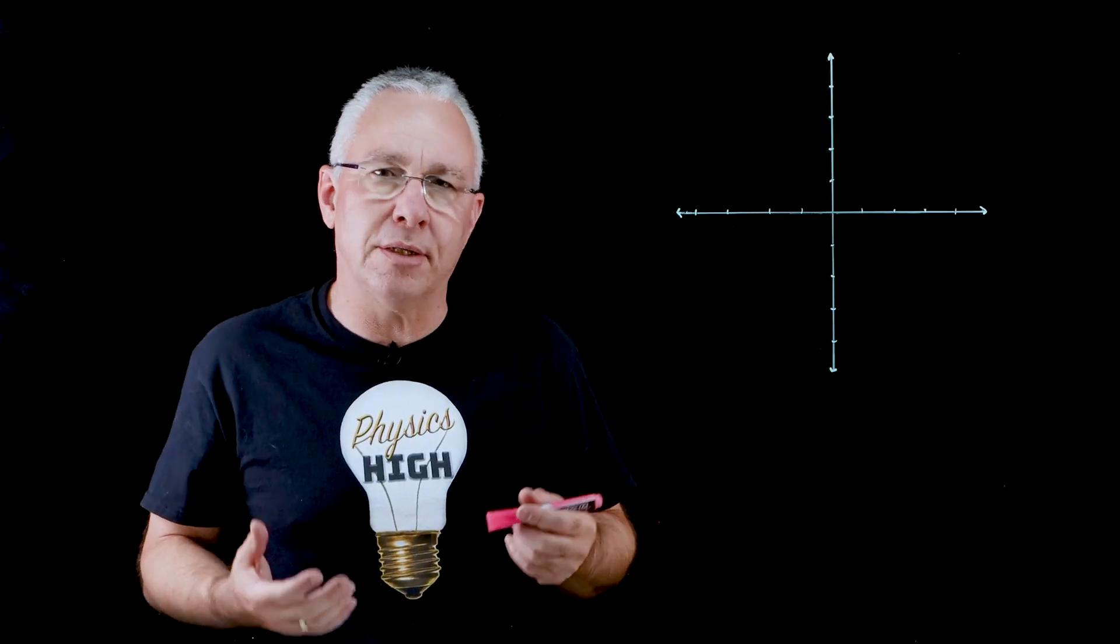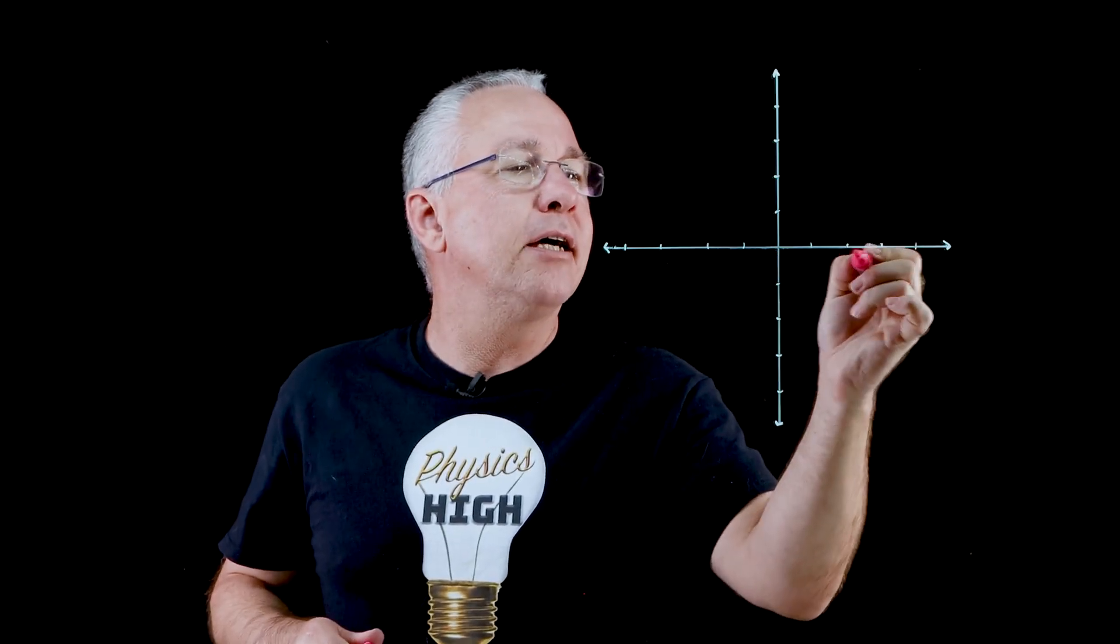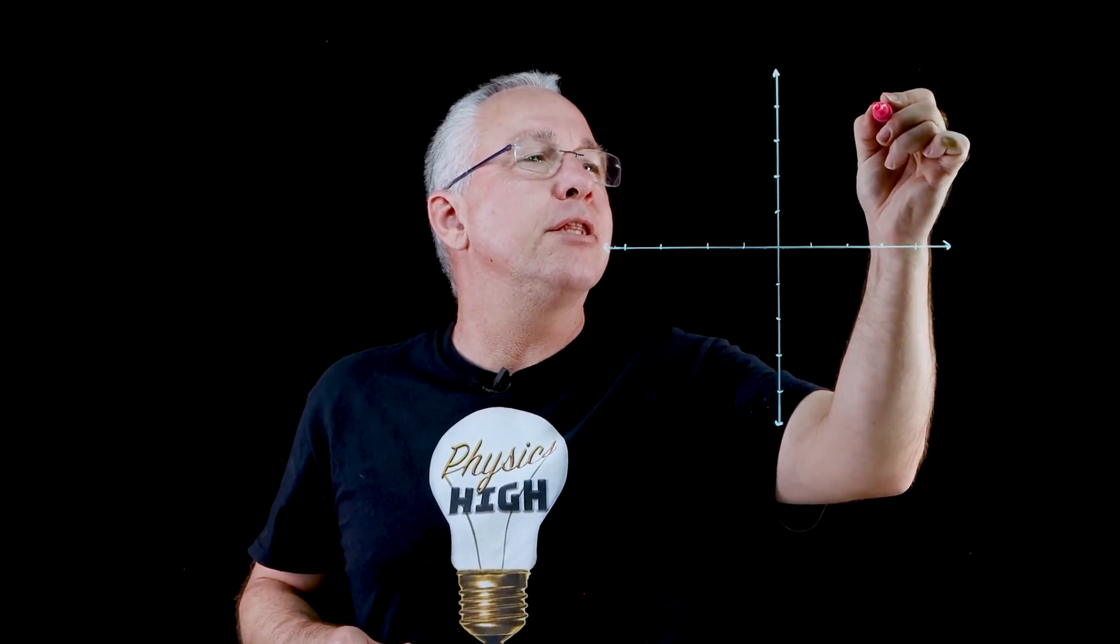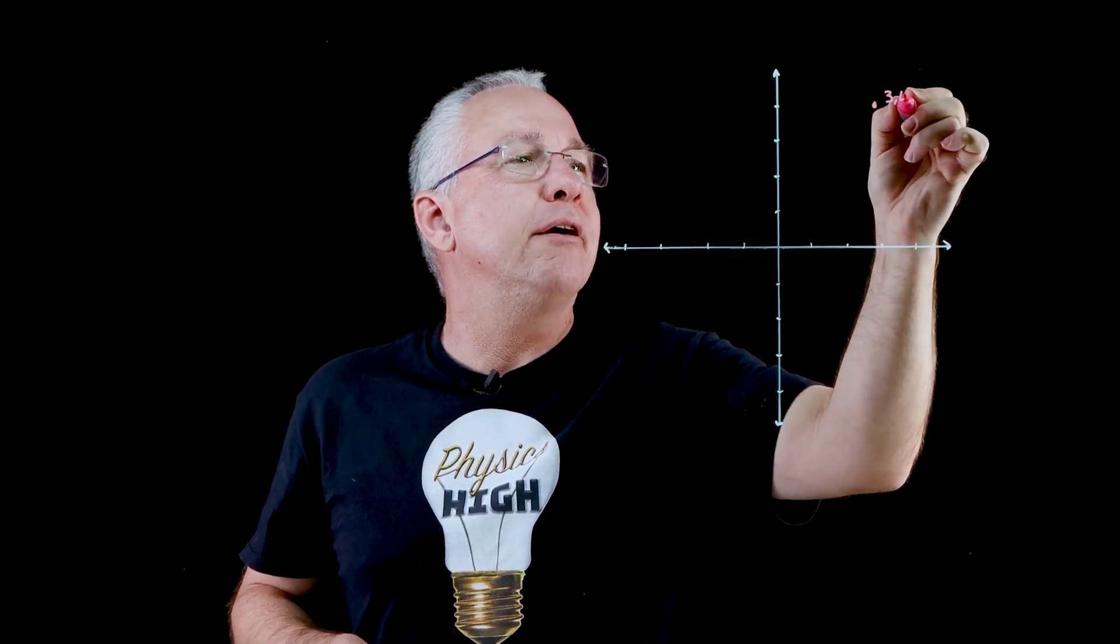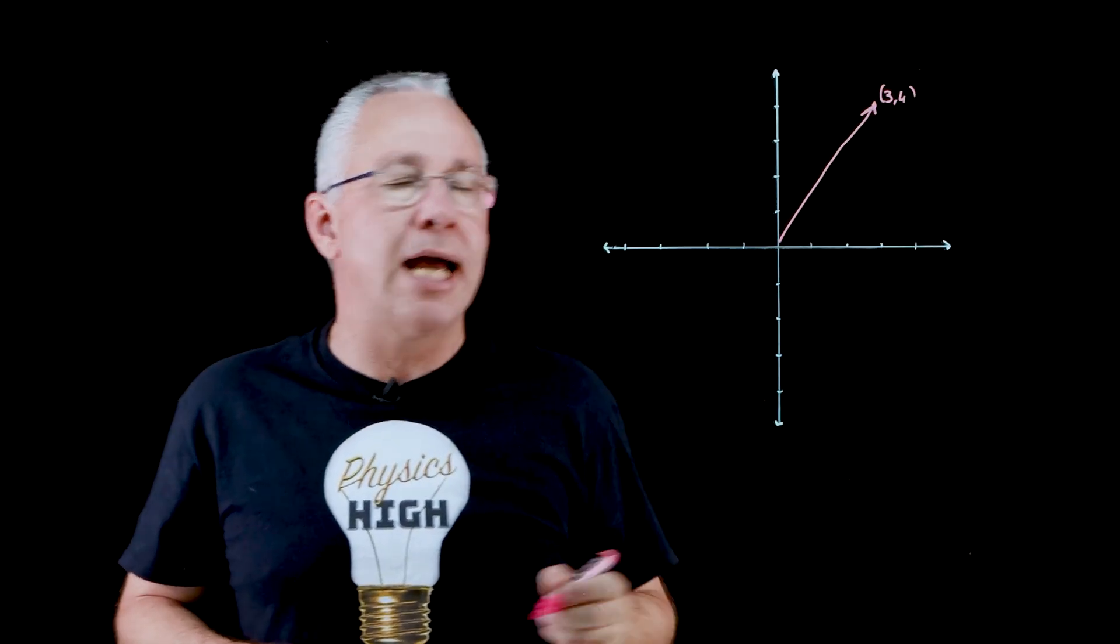So how do we use that notation in drawing a two-dimensional vector? Let's say I have a vector that is three units in the x direction and four units in the y direction. So let's say this particular point right there three four, and then of course my vector would be that particular arrow.